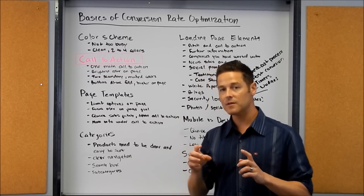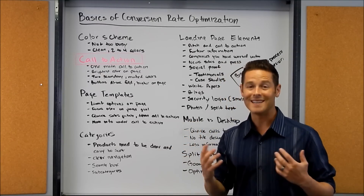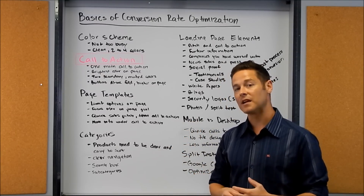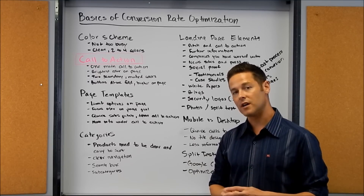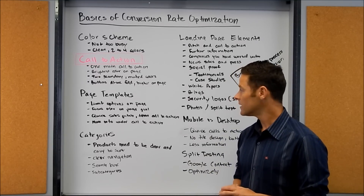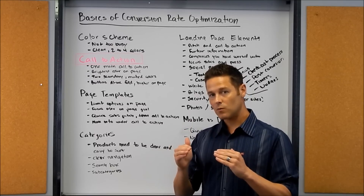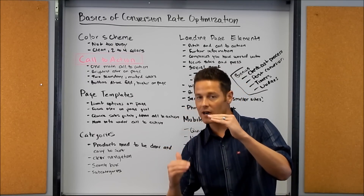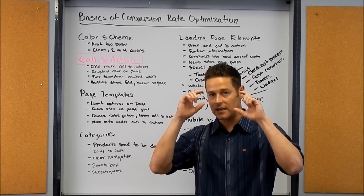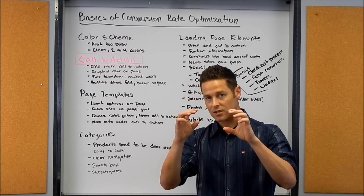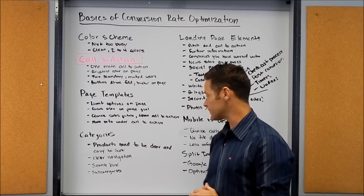Not everybody is going to convert right away — some people need more information. This is a little bit different between desktop and mobile, but I'll talk about that later. Basically, if they need more information, you want to put that underneath your main call to action. So they come in, they get their elevator pitch and call to action, and then secondary information right underneath that.